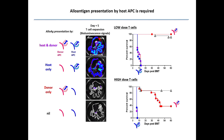As you can see, T-cell expansion is quite equivalent between the host and donor antigen-presenting group versus the host antigen presentation-only group. However, with donor antigen presentation only, they cannot expand well — and this survival bar is a quite similar direction. The host and donor antigen presentation group and the host antigen presentation-only group have severe GvHD. However, donor antigen presentation only could not induce GvHD. When the T-cell dose was really escalated, donor APC antigen presentation can induce partial disease, but mostly not. So antigen presentation by host APC is really required.